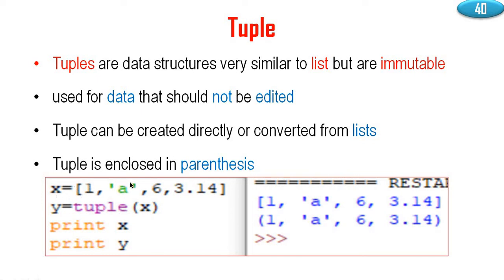Consider here: x assigned square bracket 1 comma A comma 6 comma 3.14 — so it's a list. This list is converted to a tuple. There is an integer, an alphanumeric character, and a floating point value 3.14. y assign tuple of x — in the function we convert x to a tuple. So print x: 1 comma A comma 6 comma 3.14. Print y means x is converted to a tuple.